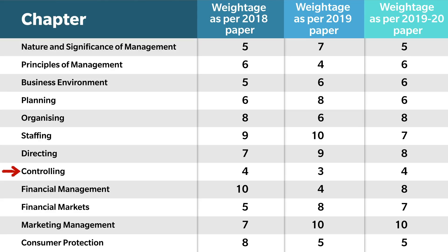For the Controlling chapter: in 2018 it was 8 marks, in 2019 it was 3 marks, and the sample paper has 4 marks. Moving to Book B — Financial Management: in 2018 it was 10 marks, in 2019 there was a drastic change with only 4 marks, and the CBSE sample paper has 8 marks. Financial Market is 5, 8, 7. Marketing Management is 7, 10, 10. Consumer Protection is 8, 5, 5.